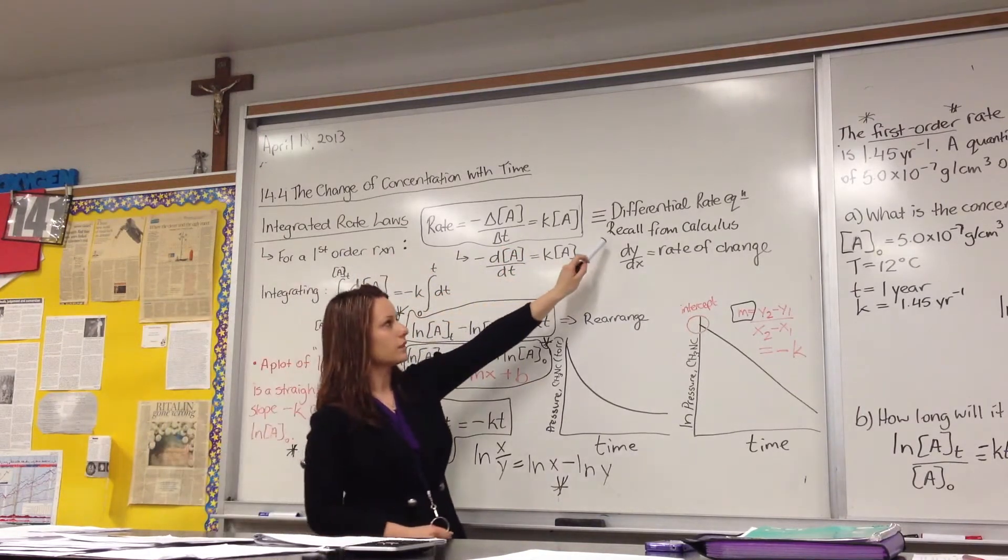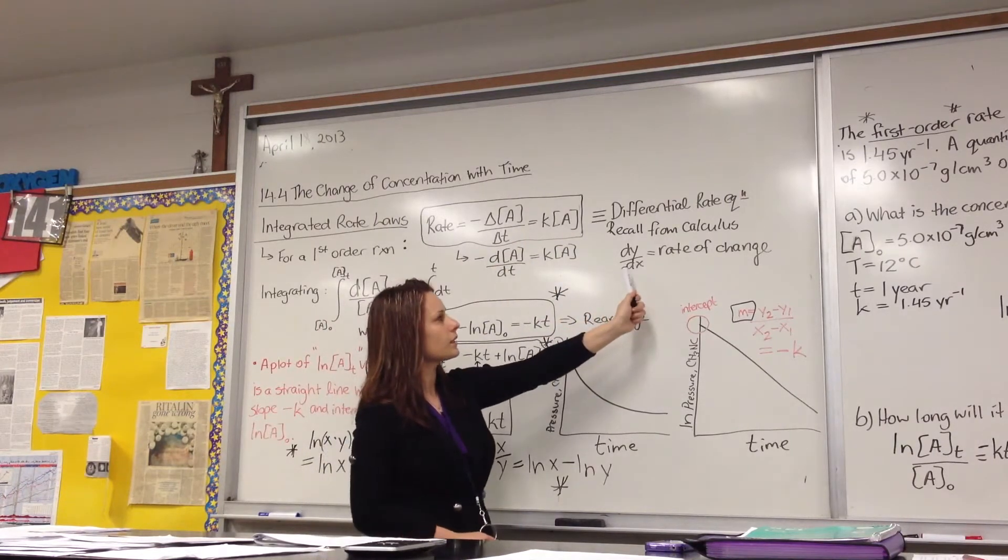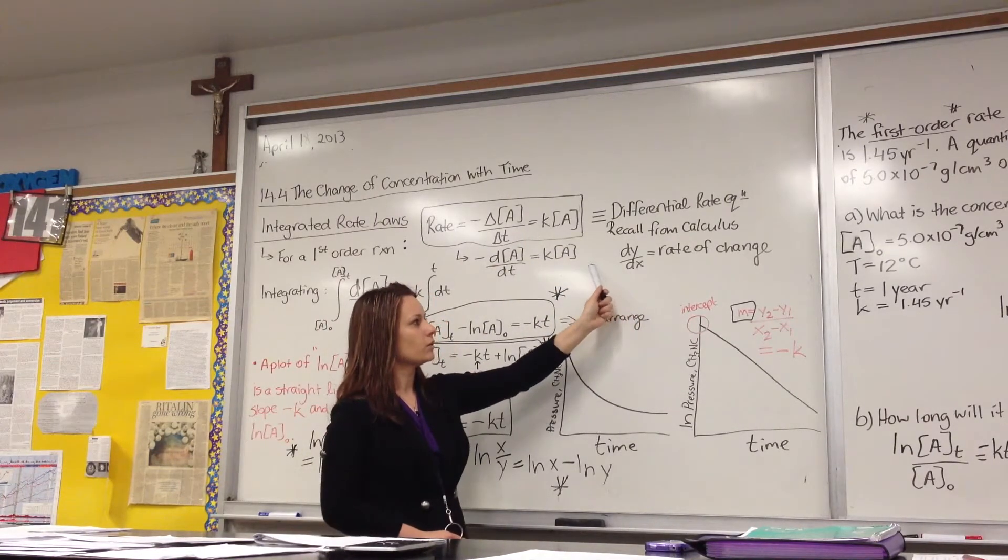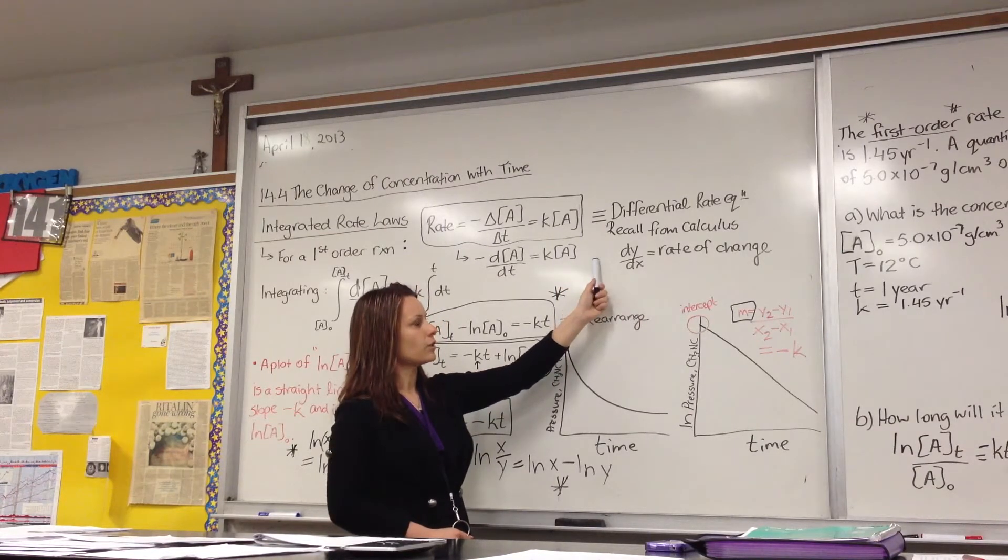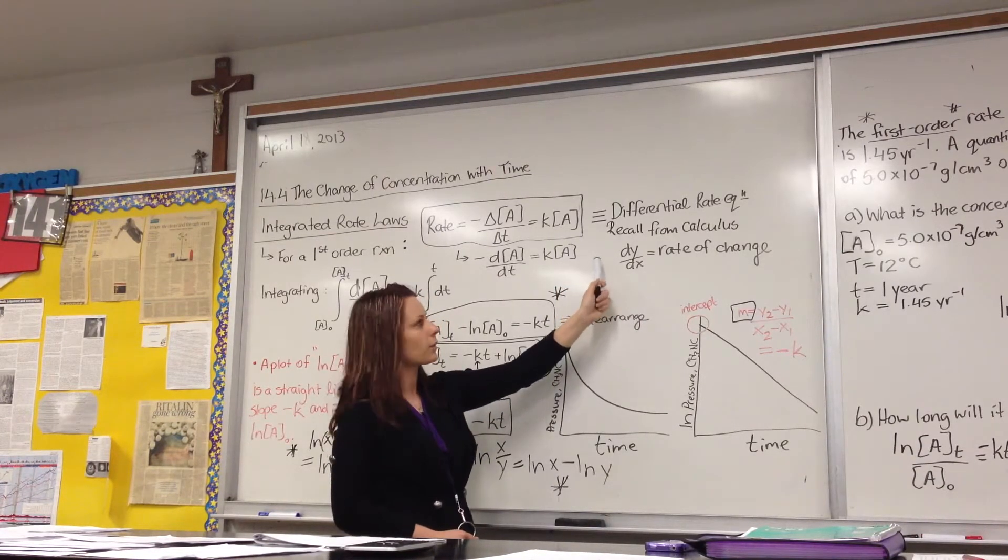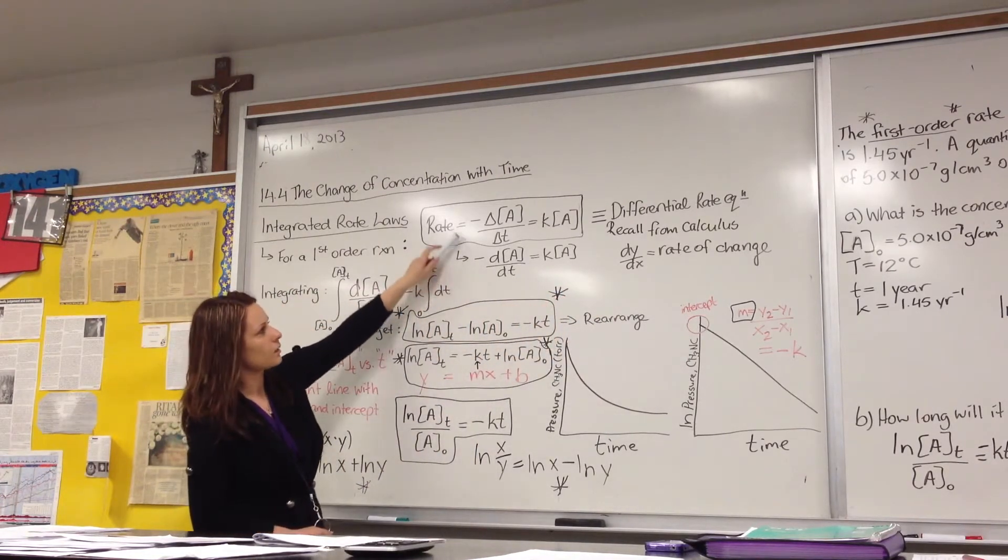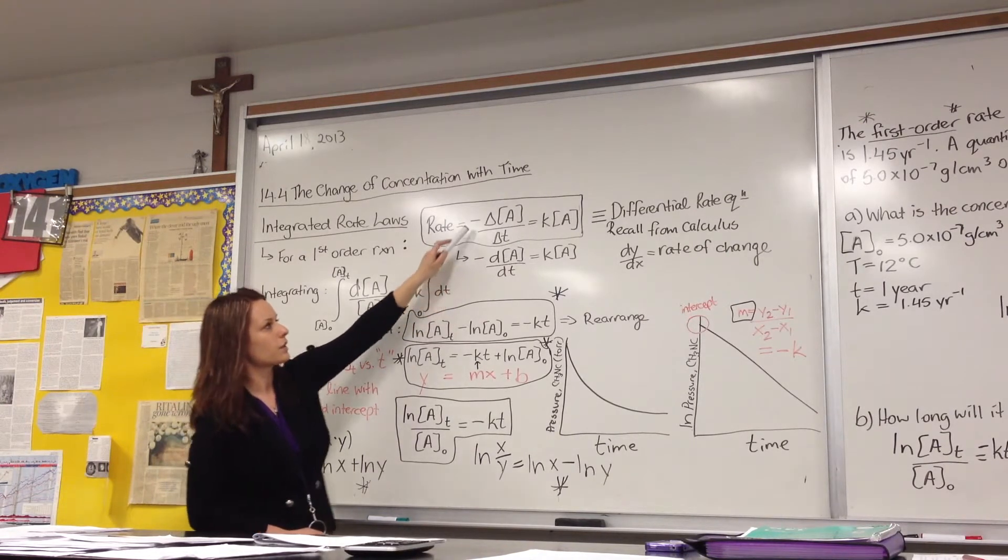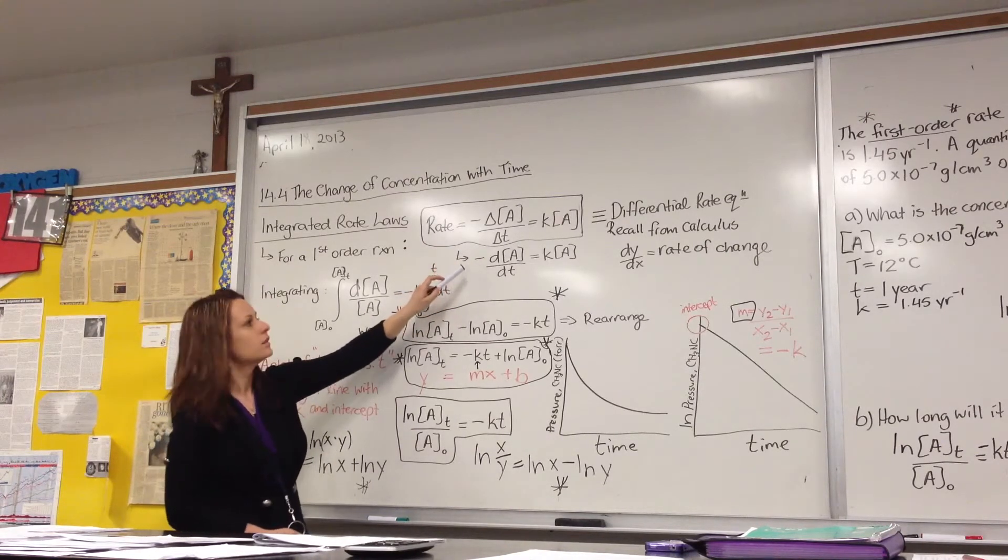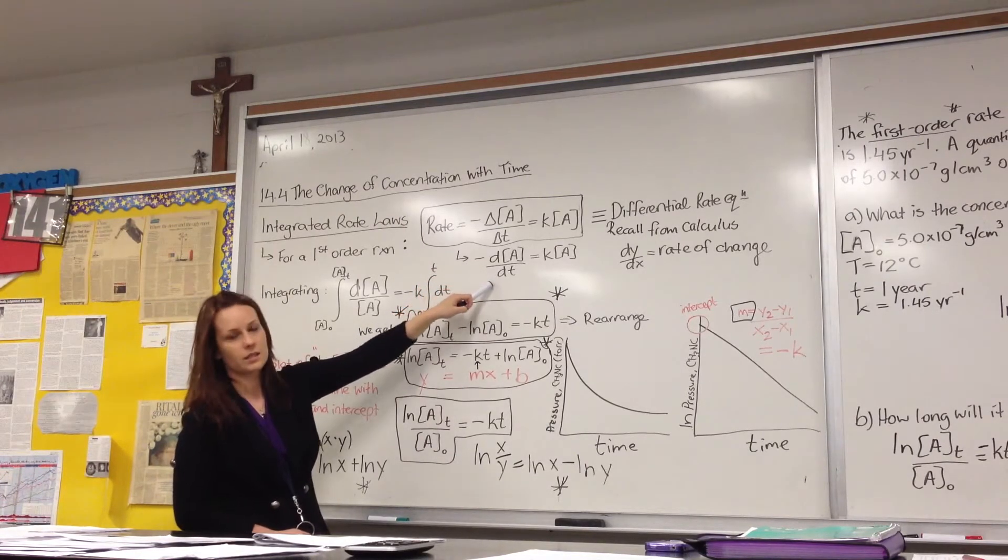This is called the differential rate equation, and if you recall from calculus, when we talk about the rate of change, we perform a differential equation, a differential operator, and we get dy by dx, and this is exactly what delta means in this case. If we perform a calculus operation, the delta actually means the D. So it's the rate of change of A with respect to time.